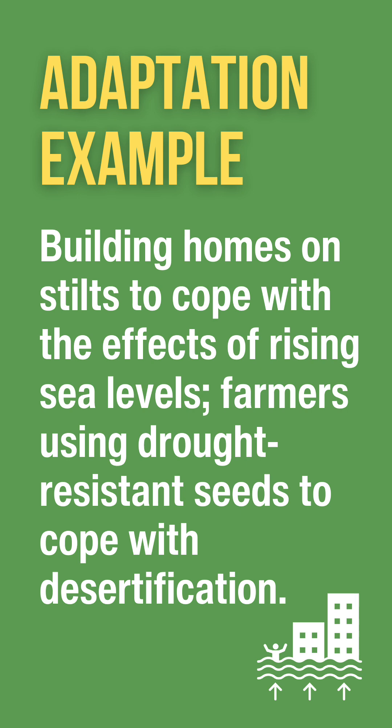An example of adaptation is building homes on stilts in low-lying countries to cope with the effects of rising sea levels, such as in the Maldives. Another example of adaptation is farmers in semi-arid areas like the Sahel in northern Africa, using drought-resistant seeds to maintain food security when crops are threatened by desertification.